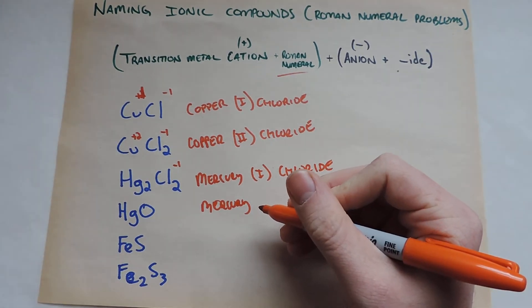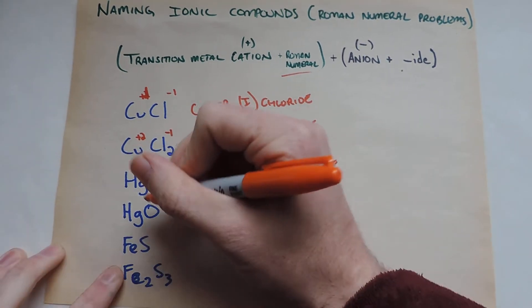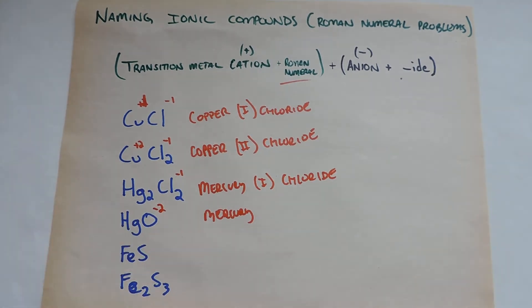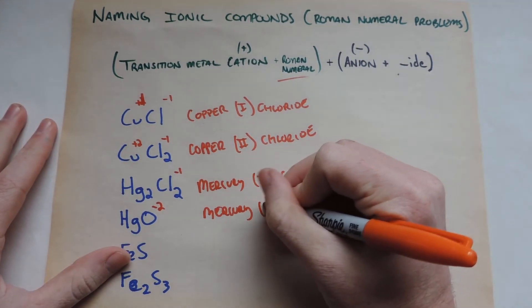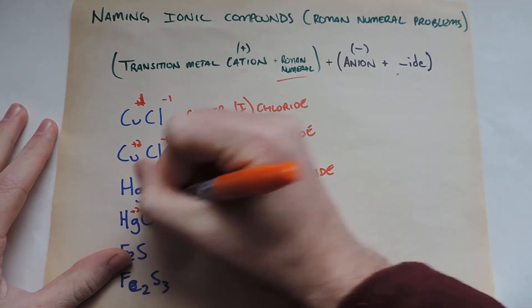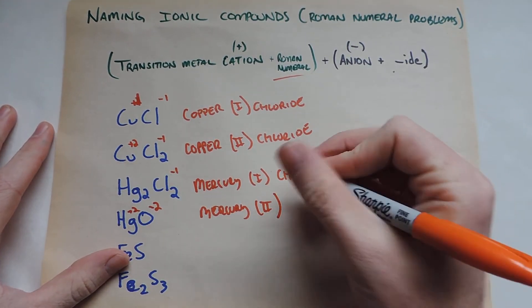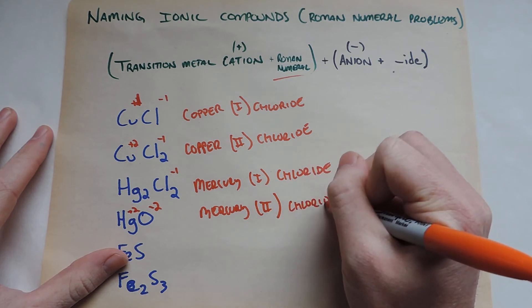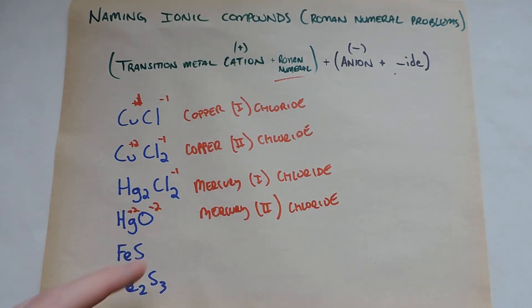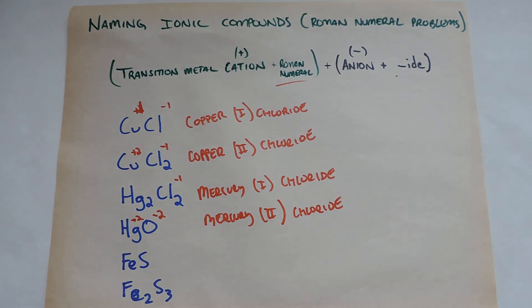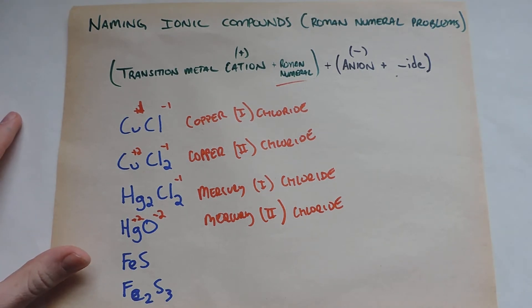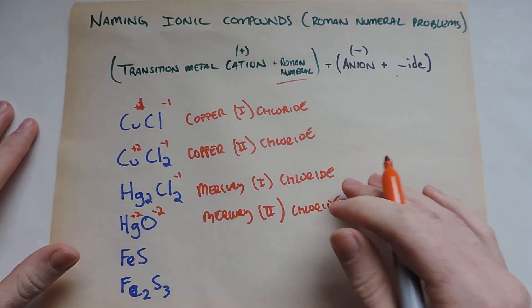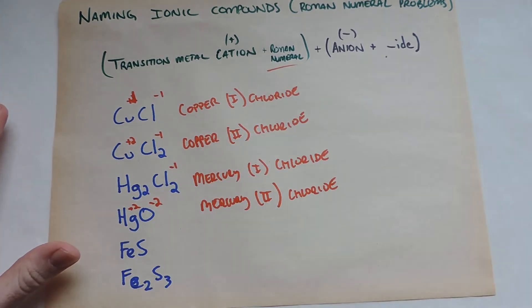Now we know oxygen, that group is actually minus two, but there's only one of them. So what does that mean? That means our mercury has to have a charge of plus two, which we express with this Roman numeral here. And then we go chloride. So when you say it out loud, you say mercury two chloride, or copper two chloride. But everything else is the same, though.